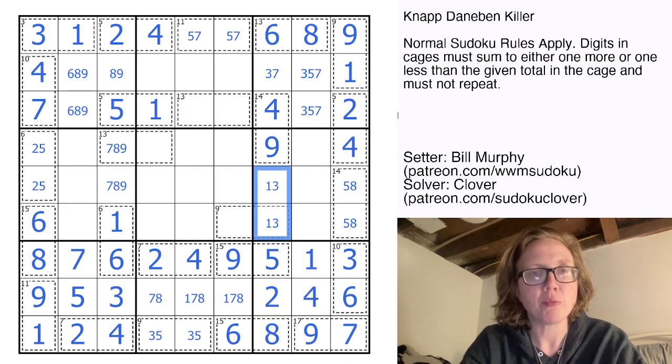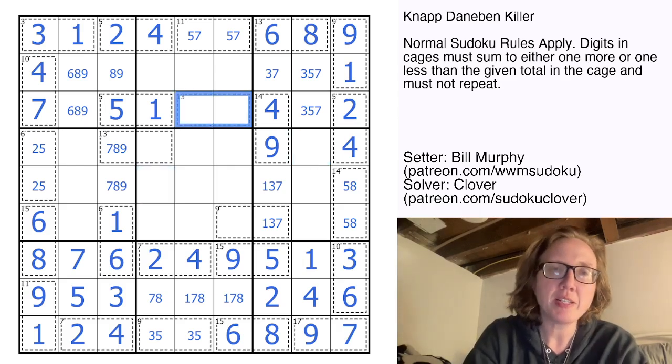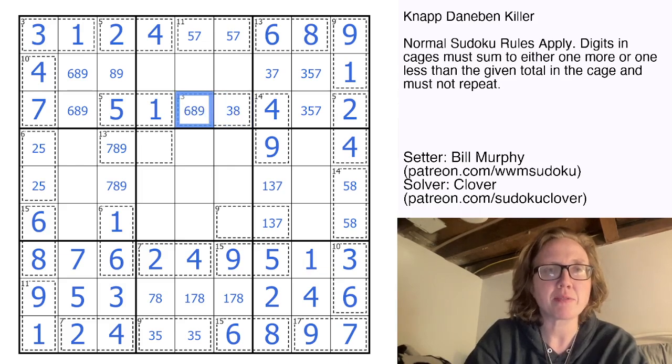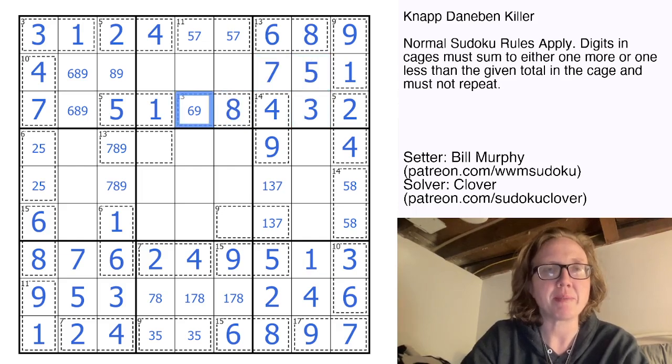So we have a four there which resolves the two and the four. And then in this column we're going to have one, three, and seven here to make a sum of 13. We could go down to 12, which would be three plus nine. We could also go up to 14, which would be six plus eight. This can't be six or nine, so this can't be three or eight. This can't be a seven or a five.